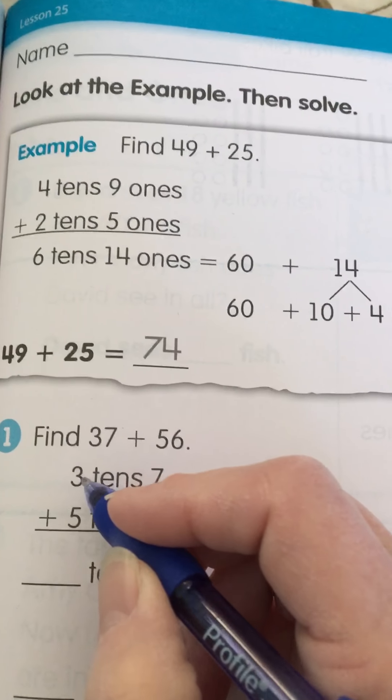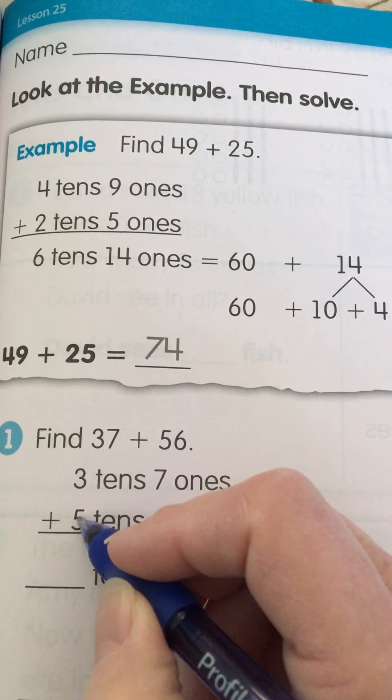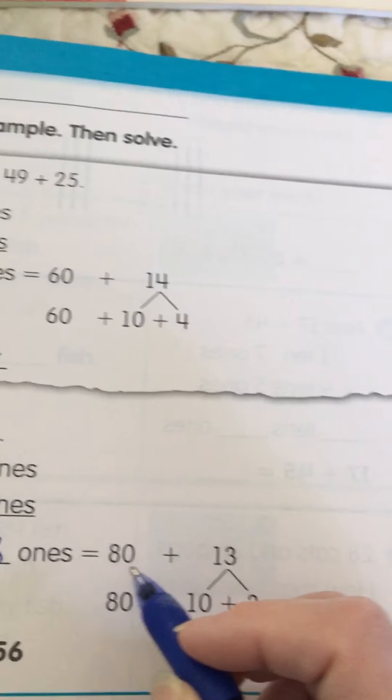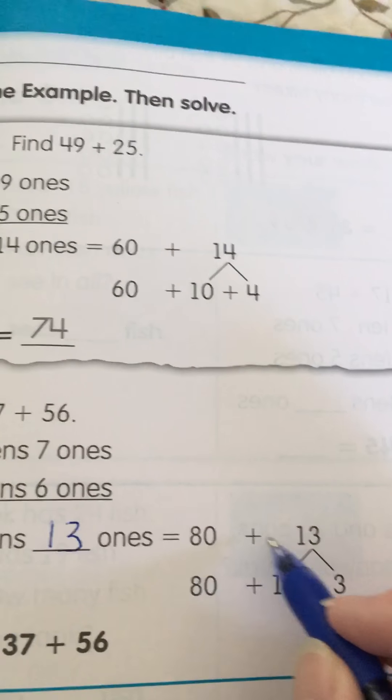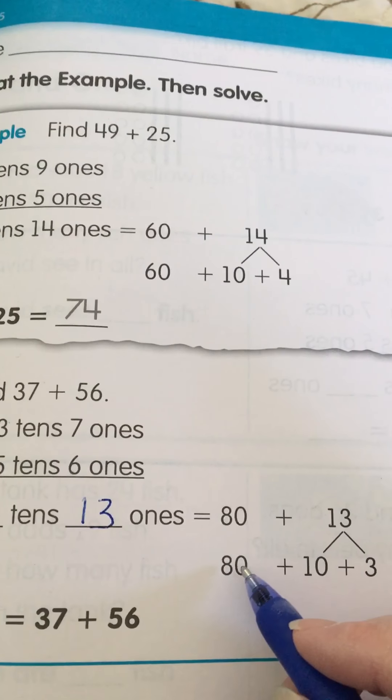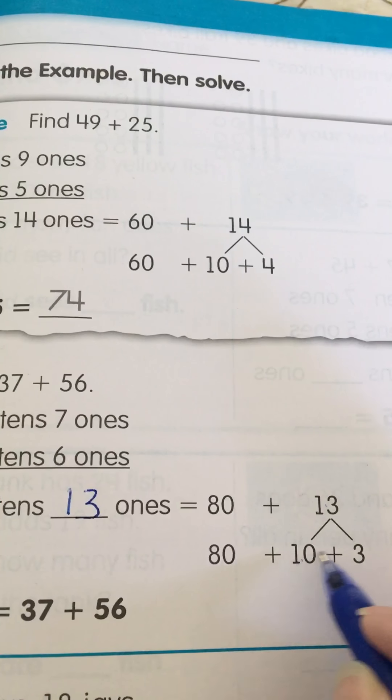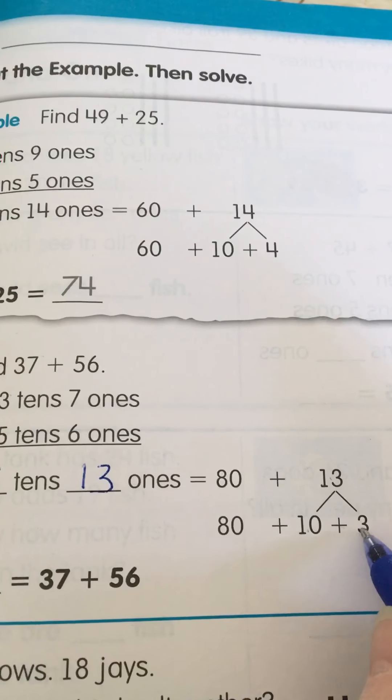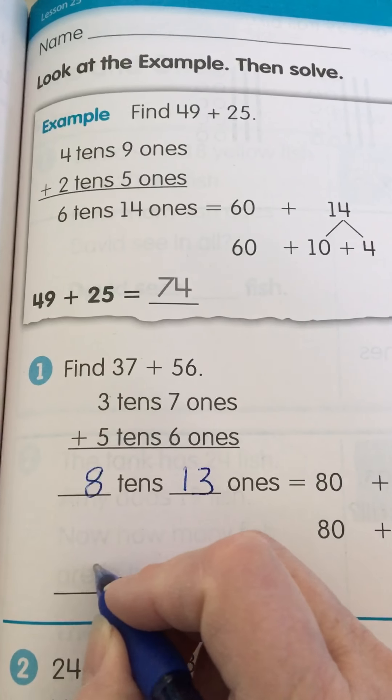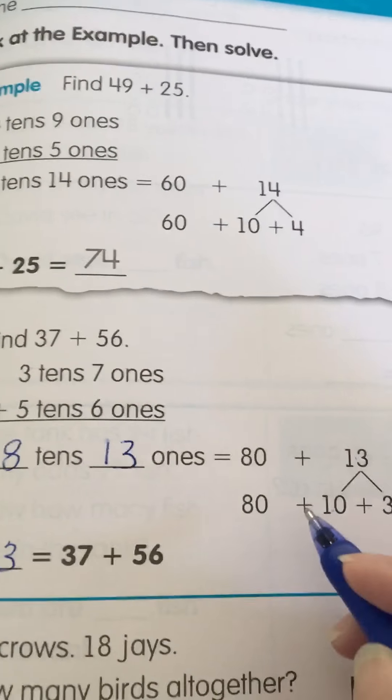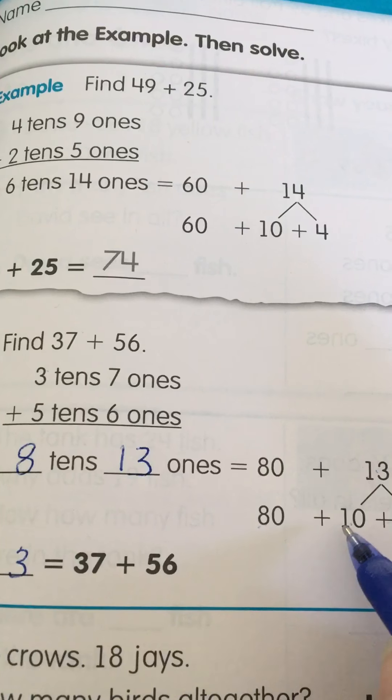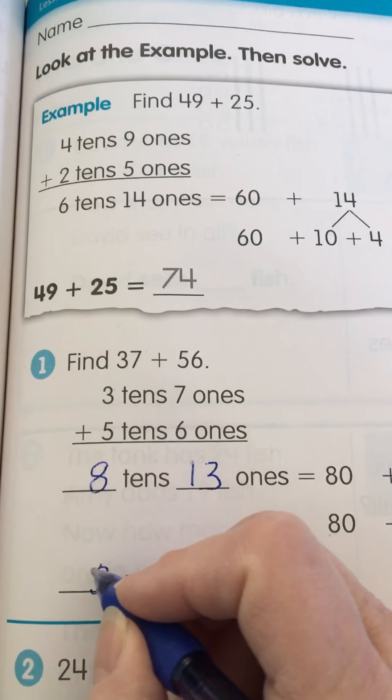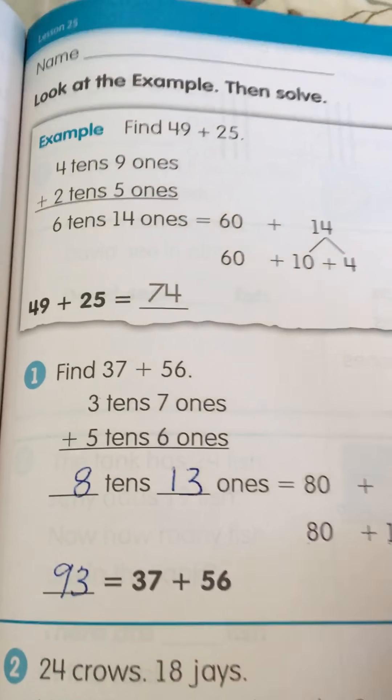And we have how many tens? Five plus three is eight tens. So that equals 80 plus 13. And 13 breaks down to 10 plus 3. So we have how many ones? We have three ones. And how many tens? 80 plus 10 is 90. So our answer would be 93.